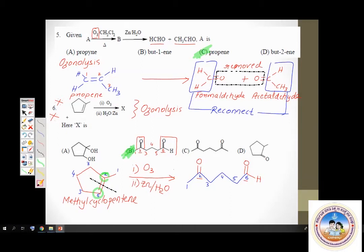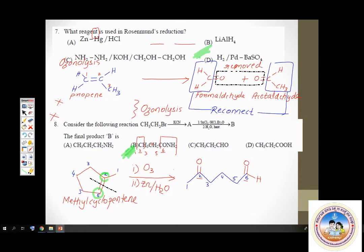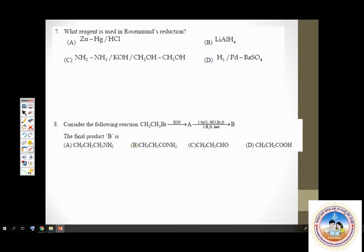Question number 7 asks which reagent is used in Rosenmund reduction. We have discussed Rosenmund reduction — it is a very important reaction. The reagent used here is hydrogen gas in the presence of palladium poisoned with quinoline, supported over barium sulfate. So option D is the answer straight away.